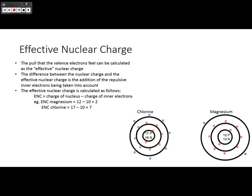Chlorine, on the other hand, has 17 protons and still has 10 inner electrons and 7 outer electrons. The pull or the effective nuclear charge of chlorine, though, is 17 minus 10, which gives it 7.